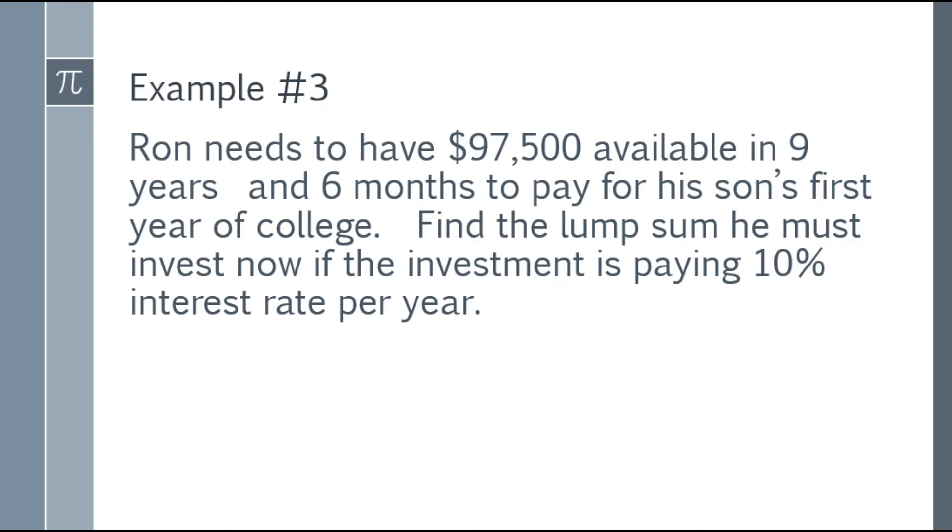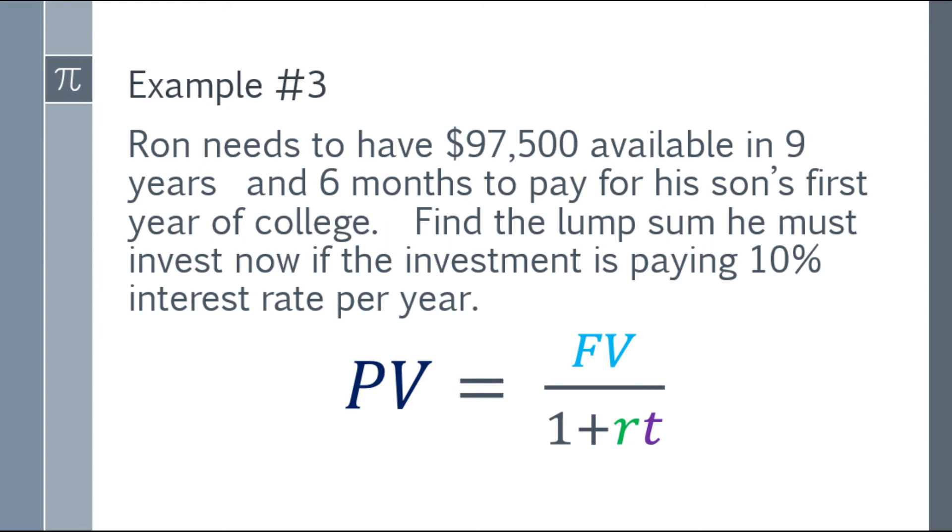Let's go to example number 3. Ron needs to have $97,500 available in 9 years and 6 months to pay for his son's first year of college. Find the lump sum he must invest now if the investment is paying 10% interest rate per year. So you have here the future value, and you have the time and also the rate. So how much does he need to invest now to get $97,500 after 9 years? So you're finding the present value.